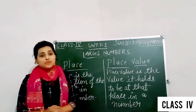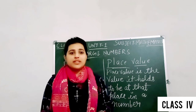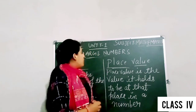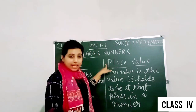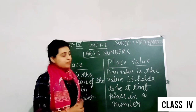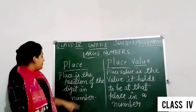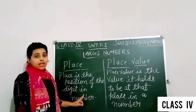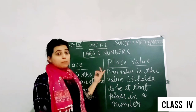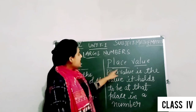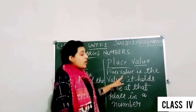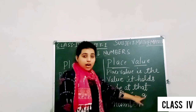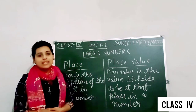Hello students. Today we will continue our unit 1, and in this video we are going to learn about place and place value of a number. Place is the position of the digit in a number. Place value is the value it holds to be at that place in a number.